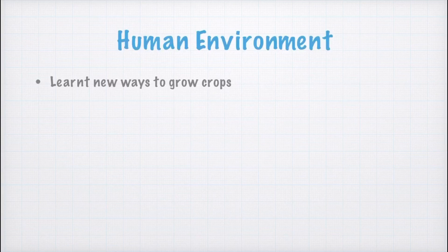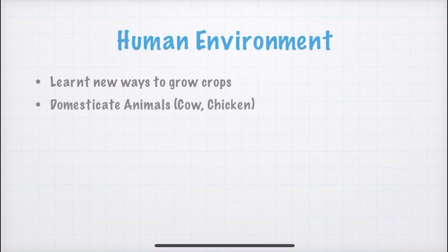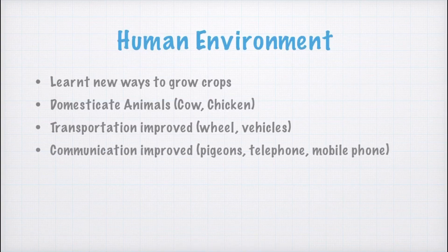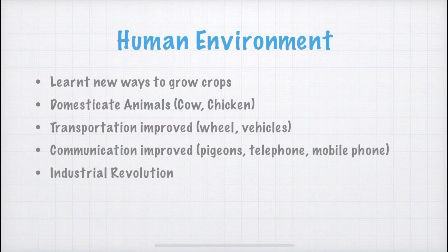As man's needs increased, he started changing. He learned new ways to grow crops and started domesticating animals — for example, cows for milk and chickens for eggs. Transportation improved: man invented wheels, then vehicles, trains, and airplanes. As transportation improved, communication also improved — earlier pigeons were used, then telephones, and now mobile phones. Humans also established industries for producing various things such as tools, vehicles, and machines. So now, man modifies nature according to his needs, which has bad effects like pollution, global warming, and so on.